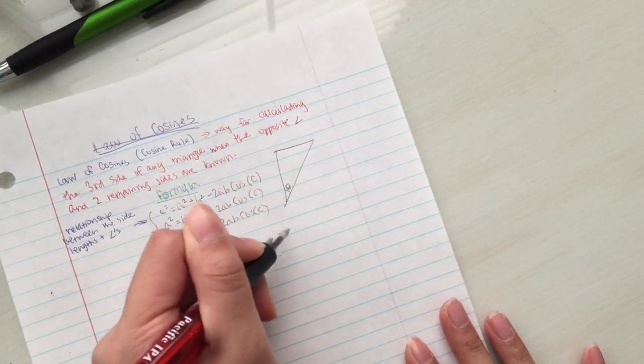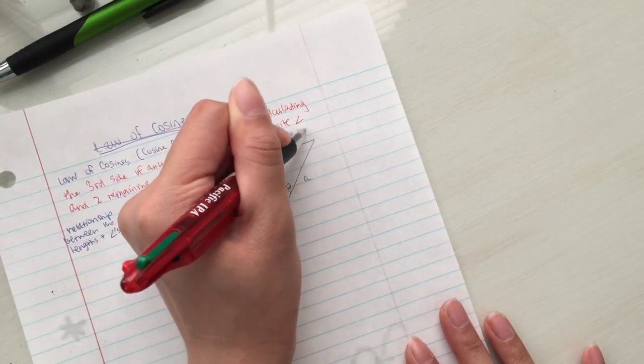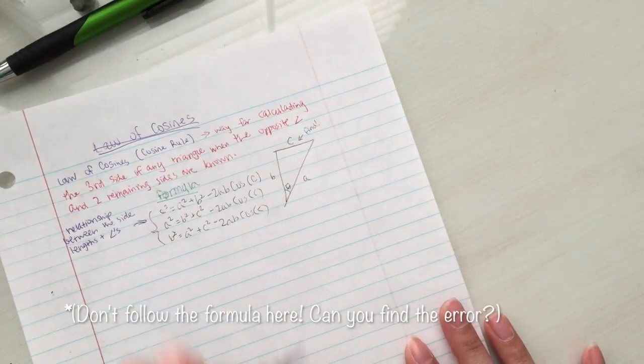As you can see in the triangle, the included angle and the sides b and a are given, and the goal is to find the third side c.